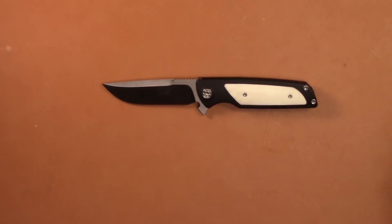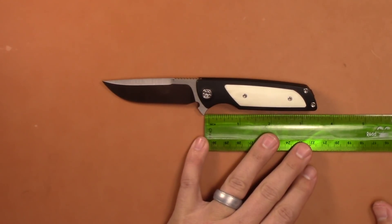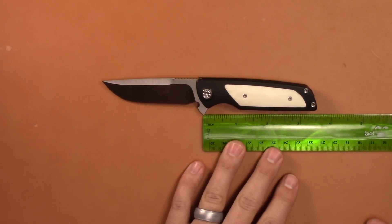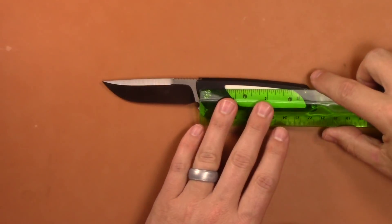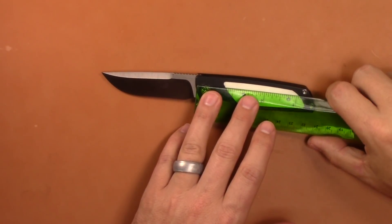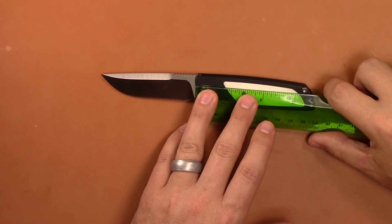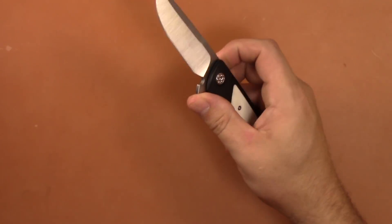I don't have a small Sebenza anymore, which I need to get another one because I love them, but it's roughly that same size. You have a three inch blade there and your handle length is going to be probably right under four inches. Actually no, it's about three and three quarters. Just over three and a half inches.